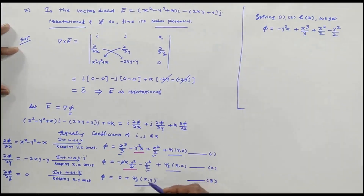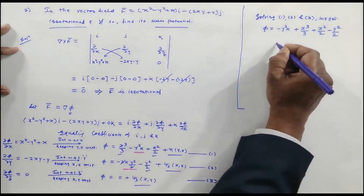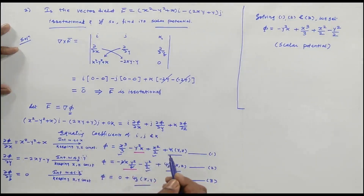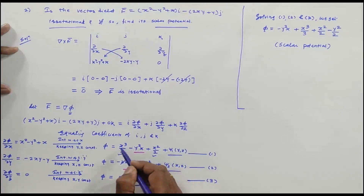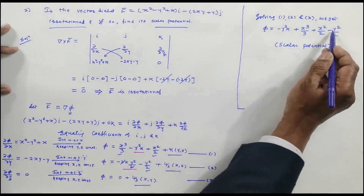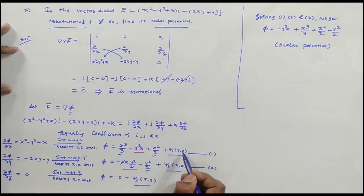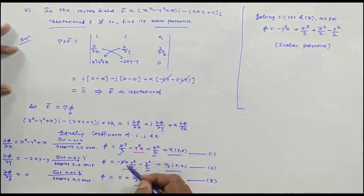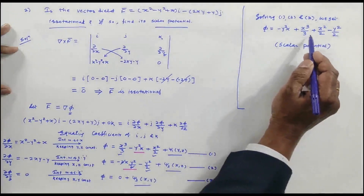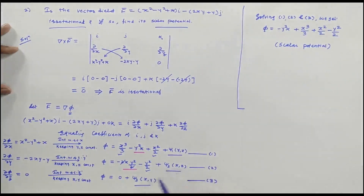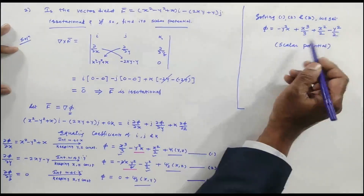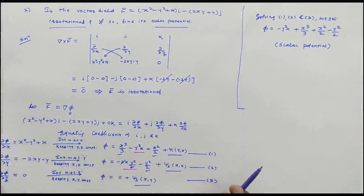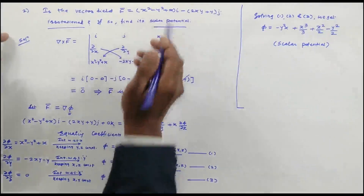We have written the common and uncommon terms: common terms appear once, and uncommon terms are all included. This is the scalar potential φ. There is no need to find ψ₁, ψ₂, ψ₃ separately — just write down common and uncommon terms directly. So φ = x³/3 - xy² + x²/2 - y²/2 is the scalar potential associated with the vector field.